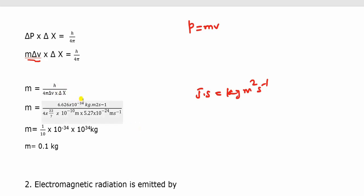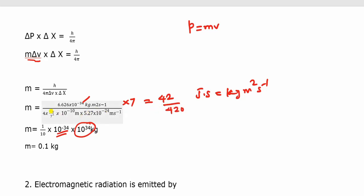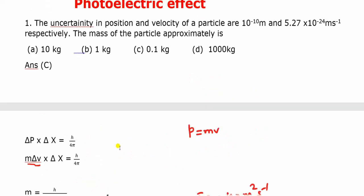The exponent calculation: 10 power minus 34 in the numerator, minus 10 minus 24 in the denominator, gives approximately 10 power minus 1. After simplification, the value comes out to approximately 10 power minus 4, giving the answer as C.